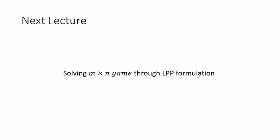In the next lecture we will look at general m×n games that cannot be solved graphically — where both m and n are strictly greater than 2, such as 3×3 or 4×5 games — and solve them using linear programming (LPP) formulation.